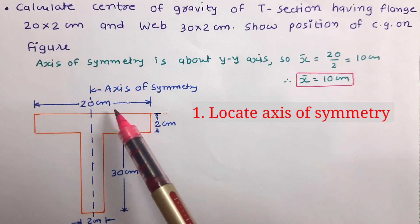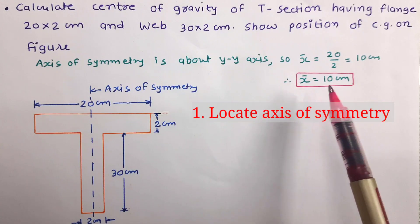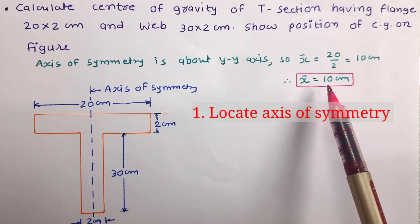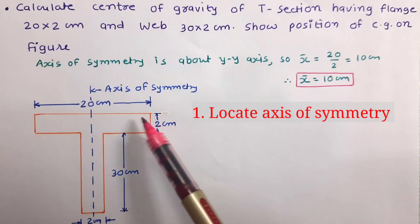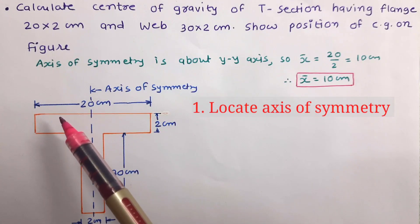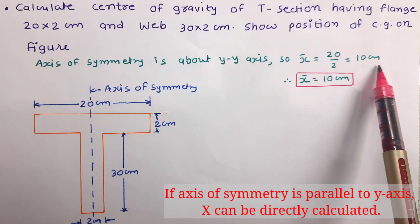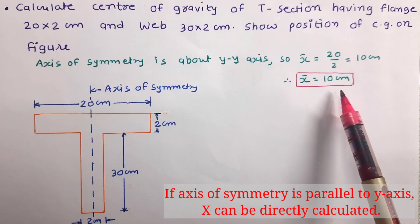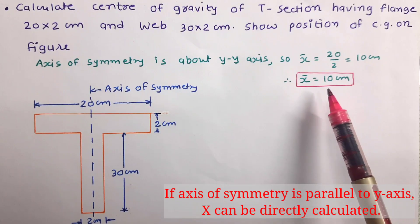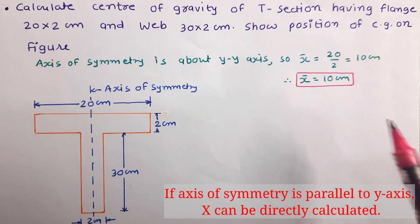x bar will be equal to the dimension of figure along x axis divided by 2. So it is 20 cm divided by 2, that is 10 cm. So x bar has been worked out. Now let us try to work out y bar.